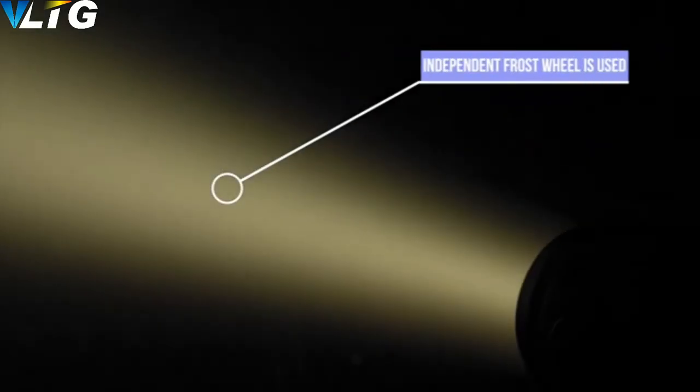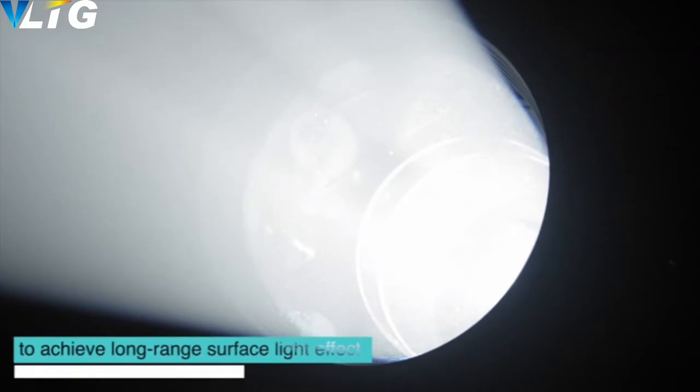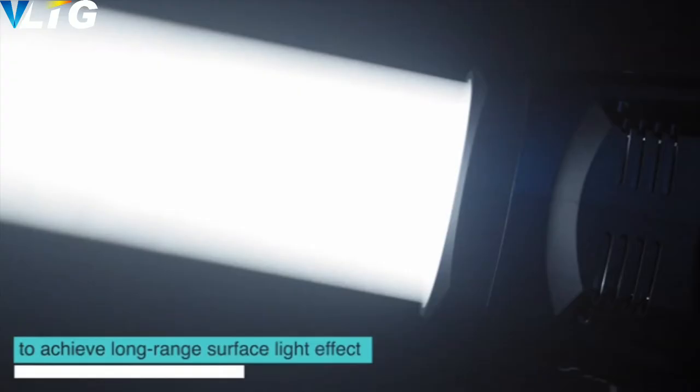Independent frost wheel is used to form larger and more uniform light spot to achieve long-range surface light effect.